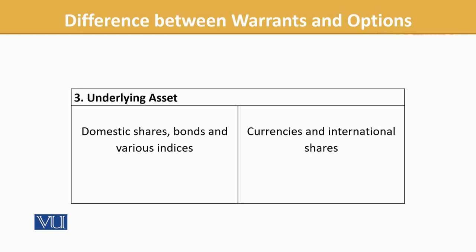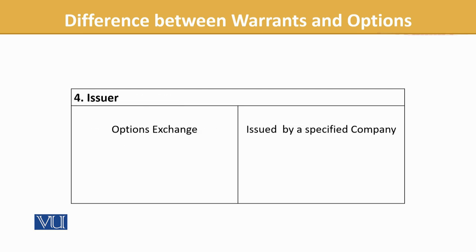But here we are mainly talking about where operations are more prevalent in markets. The issuer in the case of options is the option exchange, whereas normally in the case of convertibles and warrants, it is the company itself that issues them — specific companies issue these warrants.